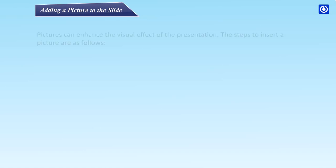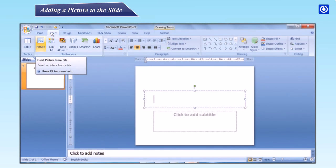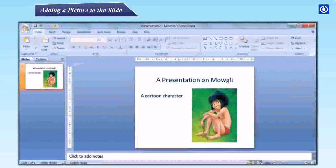Adding a picture to the slide: Pictures can enhance the visual effect of the presentation. Step 1 – Click on the Insert tab. Step 2 – Click in the Illustrations group, then click Picture. The Insert Picture dialog box appears. Step 3 – Locate the picture that you want to insert. Step 4 – Then double-click it or click the Insert button. The picture will be inserted into your slide.